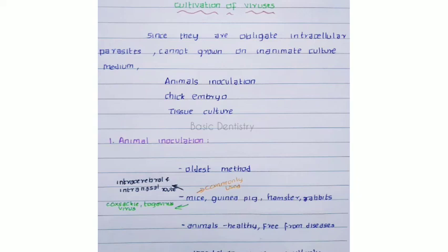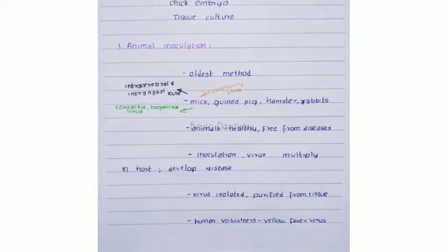Cultivation of viruses: since viruses are obligate intracellular parasites, they cannot be grown on inanimate culture medium. There are three types or methods used for cultivation of viruses: animal inoculation, chick embryo, and tissue culture method.